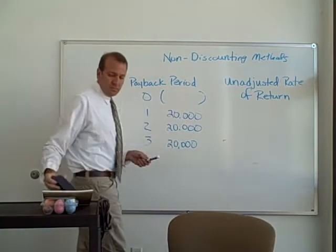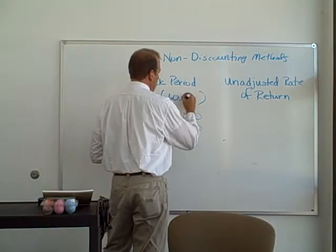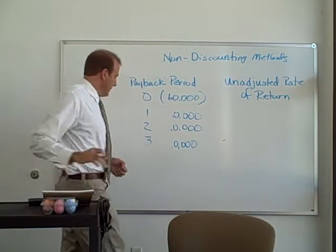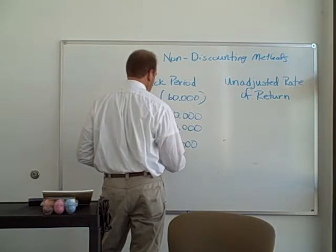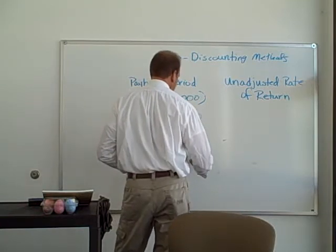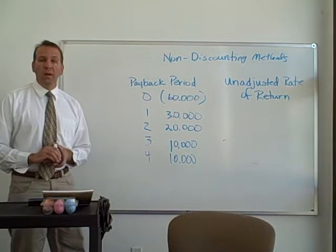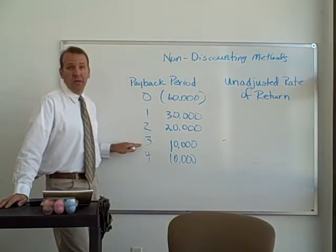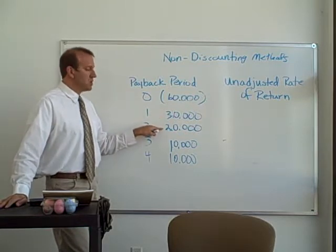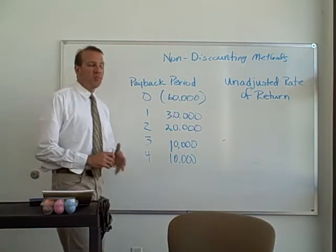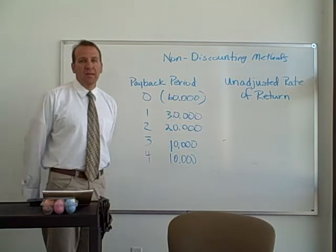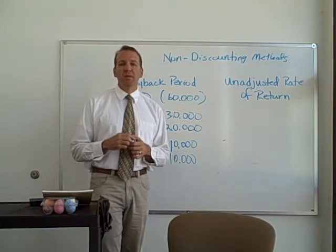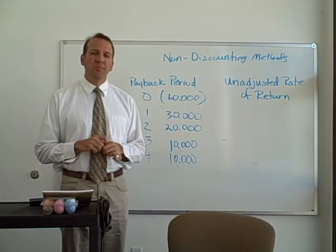Now let's say the investment was $60,000. Year one cash flow is $30,000, year two is $20,000, year three is $10,000, and year four is $10,000. The payback period is exactly three years, because $30,000 plus $20,000 plus $10,000 equals $60,000 — we get our investment back in three years. Obviously this isn't fully accurate because it does not take into consideration the time value of money, but it's a quick way for businesses to calculate the payback period to help with capital budgeting decisions.